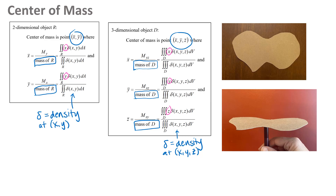For our purposes here, we're really going to be calculating center of masses. I want to look at one example to understand what we're calculating so you can think about whether your answers are reasonable. I've got a picture of a piece of cardboard cut into an irregular shape — a two-dimensional object, like a region R. The center of mass is like a balancing point, and in the second picture you can see I balanced that cardboard region on the end of my pen.